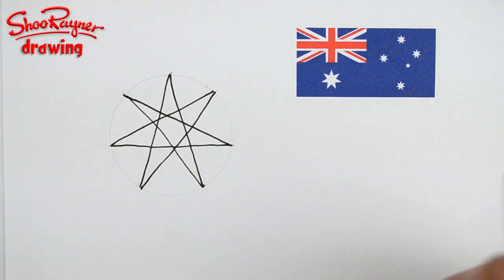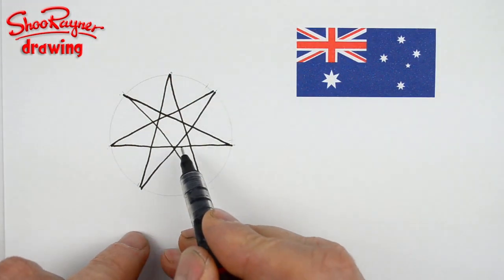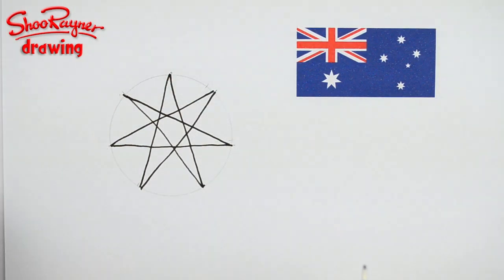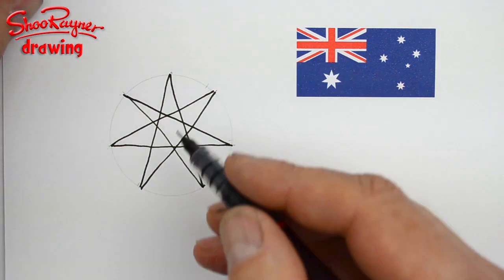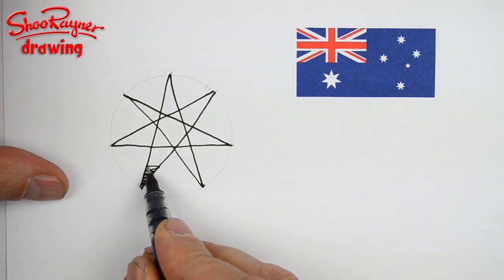Now you can tell there's not a perfect star really because of the shape in the middle, which should be a really good heptagon. But it gives you a rough kind of idea of how to do a seven-pointed star.